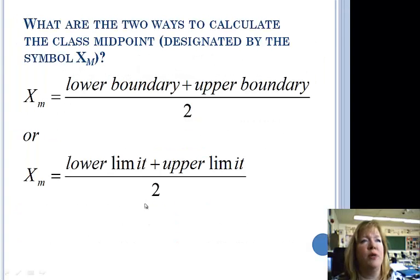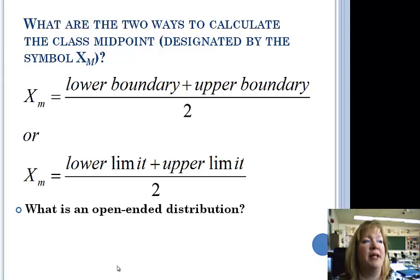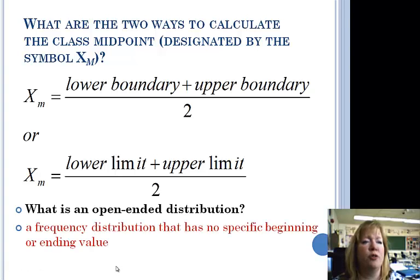What are the two ways to calculate the class midpoint? Now this is the class midpoint. You take the lower boundary plus the upper boundary, divide by two, that's one way. Take the lower limit plus the upper limit, divide by two, that's the other way. You should get the same thing either way you do it. What is an open-ended distribution? Frequency distribution that has no specific beginning or ending value. It could go on forever. Either way. Okay, that's enough notes for day one. That takes you through page four. It didn't seem to take very long, did it?